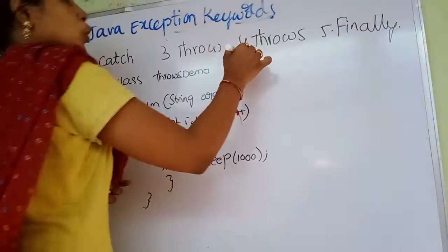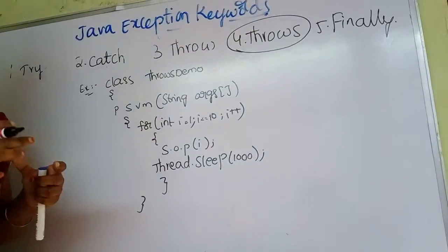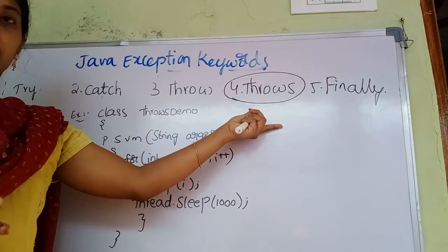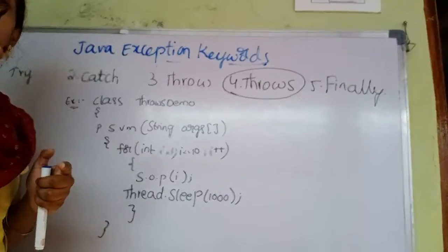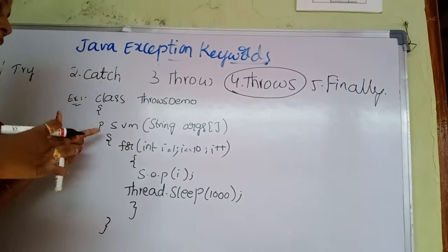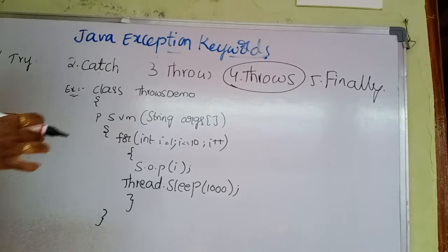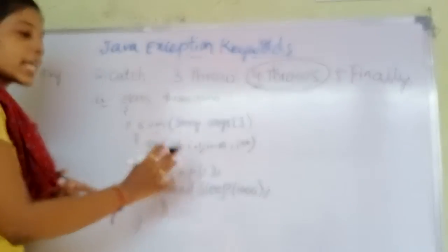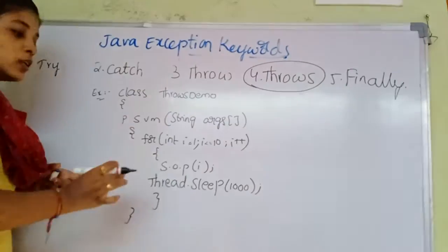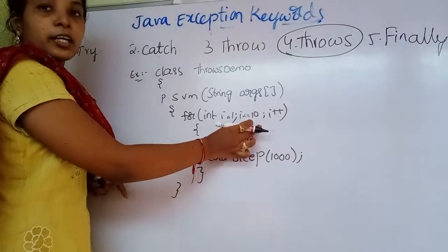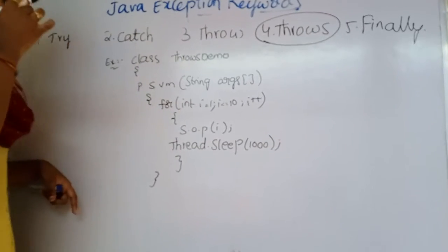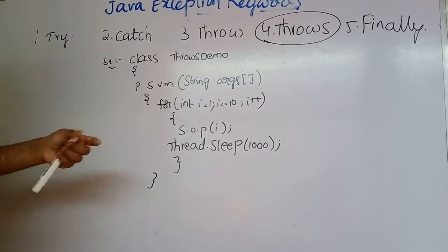The next topic is the throws keyword. The main purpose of the throws keyword is to declare exceptions in a method. For example, in the public static void main method, we can write a for loop. This for loop will repeat until the condition is terminated, with the condition being i incrementing until the loop ends.